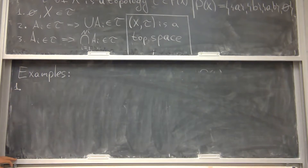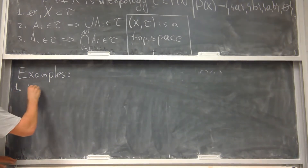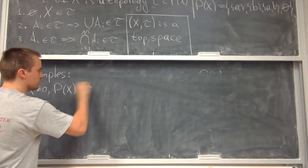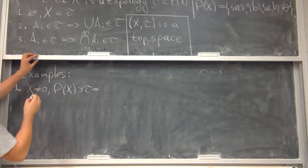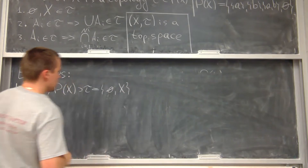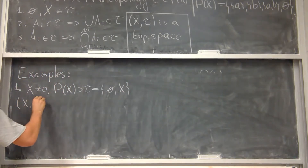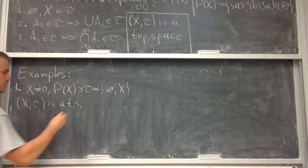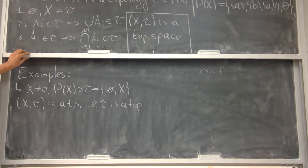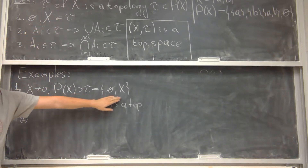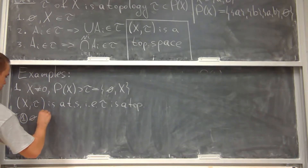For the first example, let's take any non-empty set X and consider the topology τ consisting of just two elements: the empty set and X itself. Our goal is to show that (X, τ) is a topological space — in other words, that τ is a topology. We check the three conditions. Condition one: we need the empty set and X to belong to τ. This is trivially true, so condition one is checked.